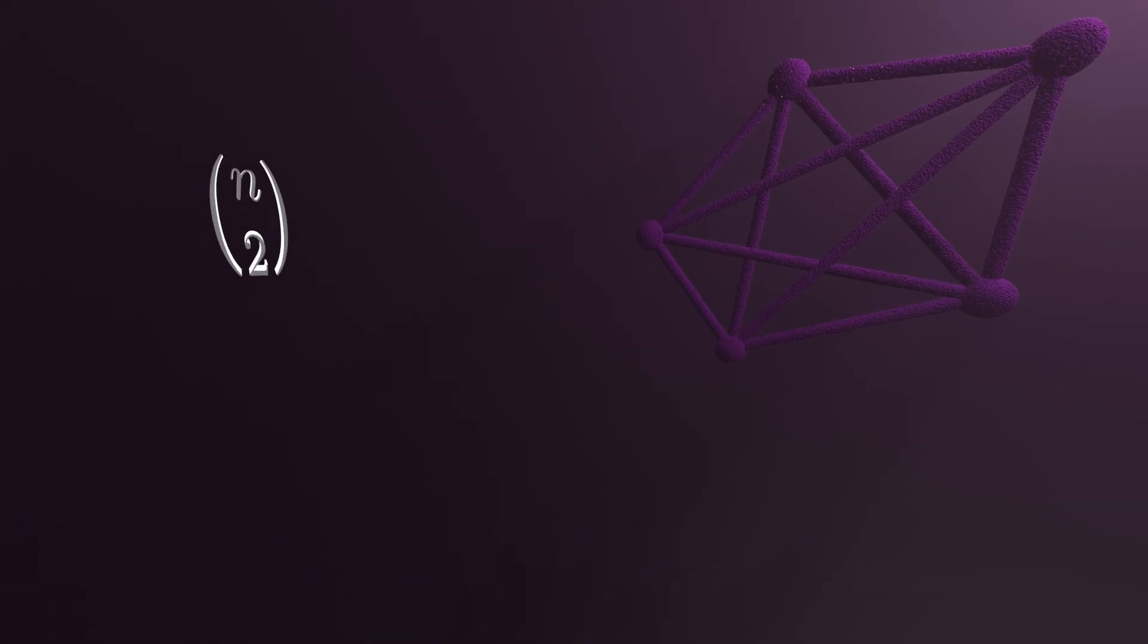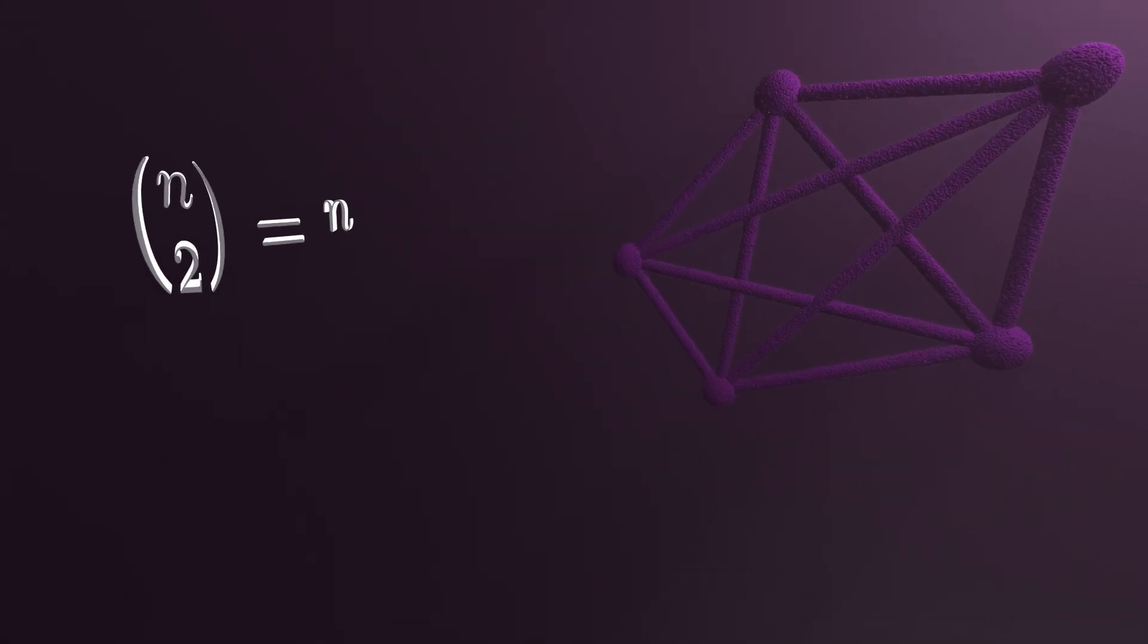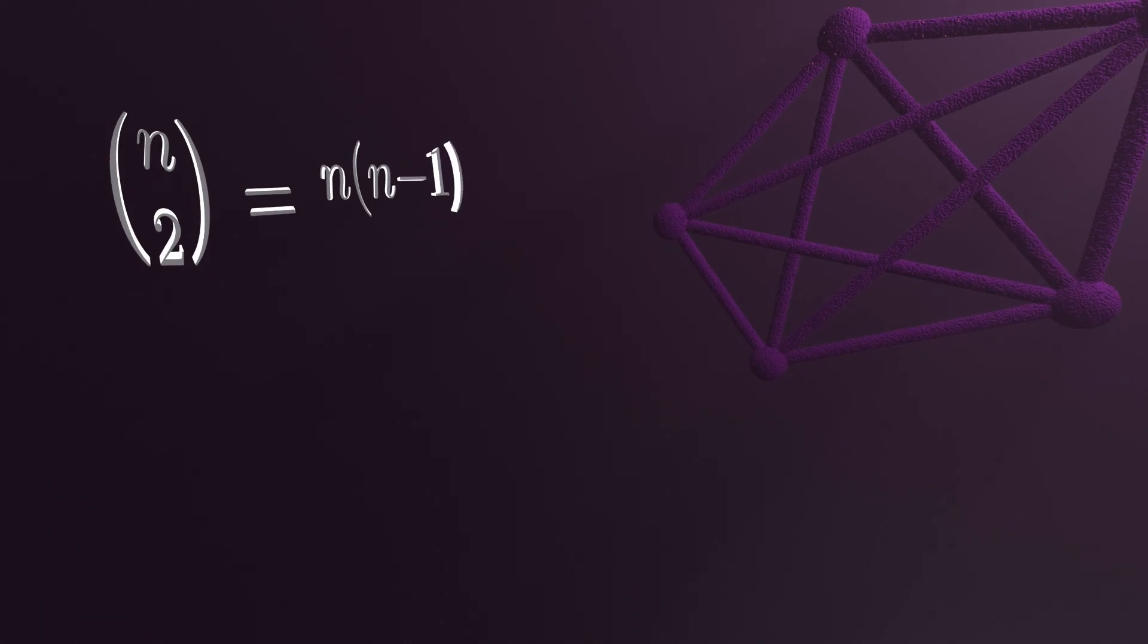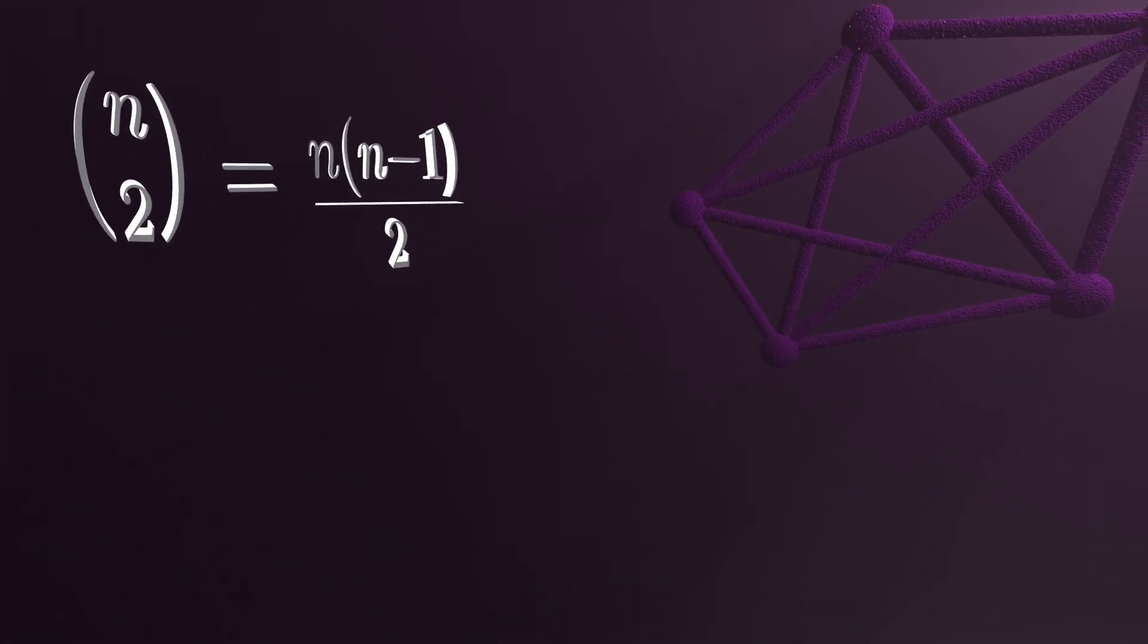because for an edge, you have to choose two nodes. There's n choices for the first, then n minus 1 for the second, but the order of the vertices doesn't matter. So you divide that by two.